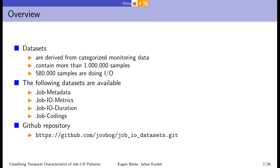So we have created four different datasets out of this data. One of them contains job metadata, and the other three contain job I/O metrics, job I/O duration, and job codings. The datasets can be downloaded from the GitHub repository.